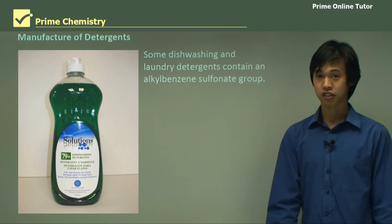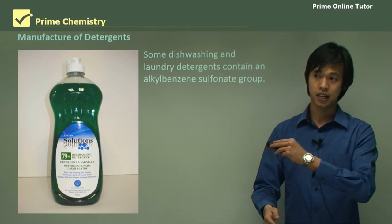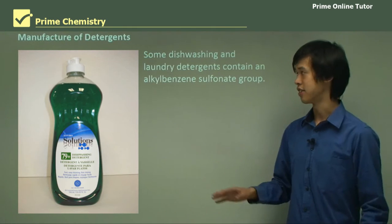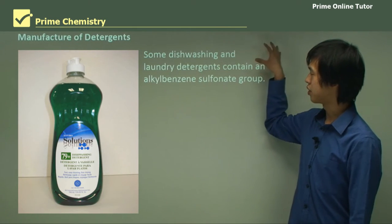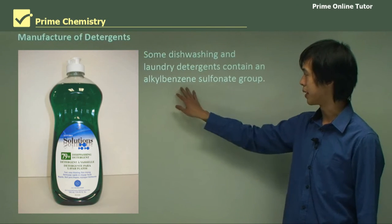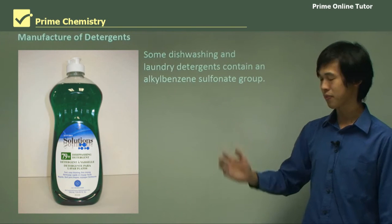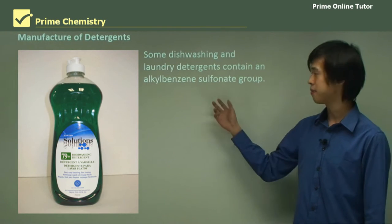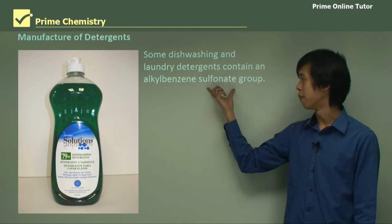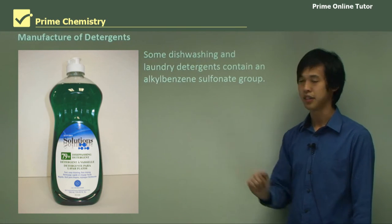We also use sulfuric acid to manufacture synthetic detergents. Some dishwashing and laundry detergents contain alkyl benzene sulfonate groups — these are anionic detergents, which we'll talk about later — and we use sulfuric acid to help produce these chemicals.